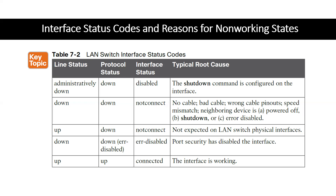If the show interface status shows line status down, protocol status down, and interface status 'not connected,' typical root causes include: no cable, bad cable, wrong cable pinouts, a speed mismatch, a neighboring device that is powered off, the neighboring device being shut down, or error-disabled. All of these relate to Layer 1 and Layer 2.